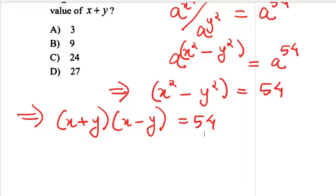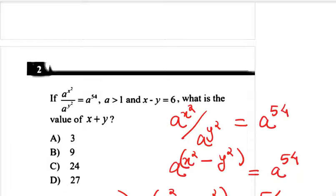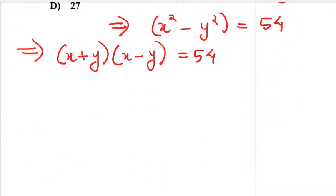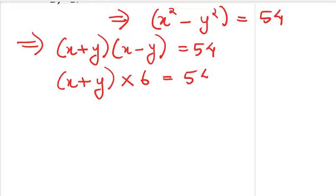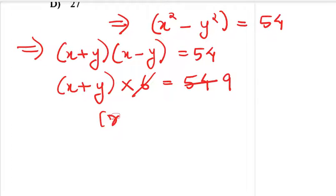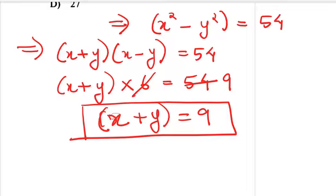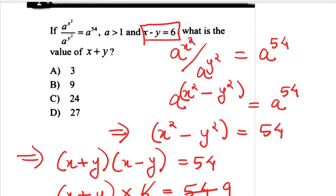x minus y is given to us as 6. So substituting, (x + y) × 6 = 54. Therefore x + y = 9. That is our final answer, which is option B.